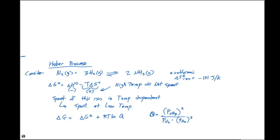Le Chatelier observed this first. He said if you have an equilibrium and you apply a stress to it, you can shift it one way or the other. If we want to favor the products, we need to increase the partial pressure of nitrogen and hydrogen. It should be common sense that if we want to make ammonia, having more nitrogen and hydrogen around and increasing those pressures will give us more yield. An industrial chemist can manipulate these pressures to increase yield.